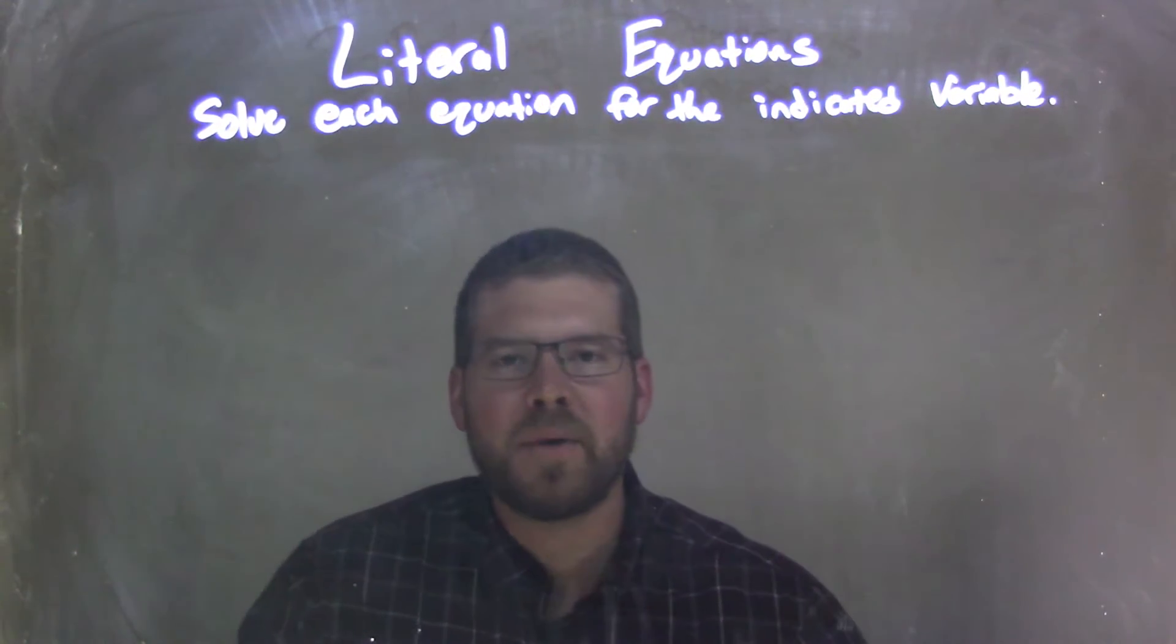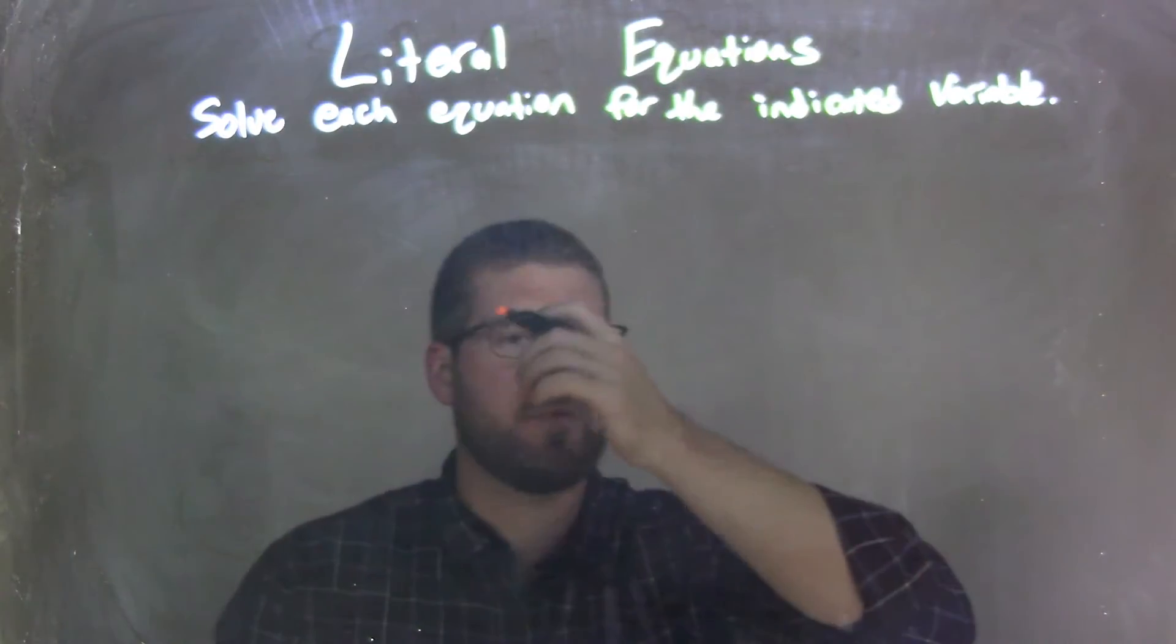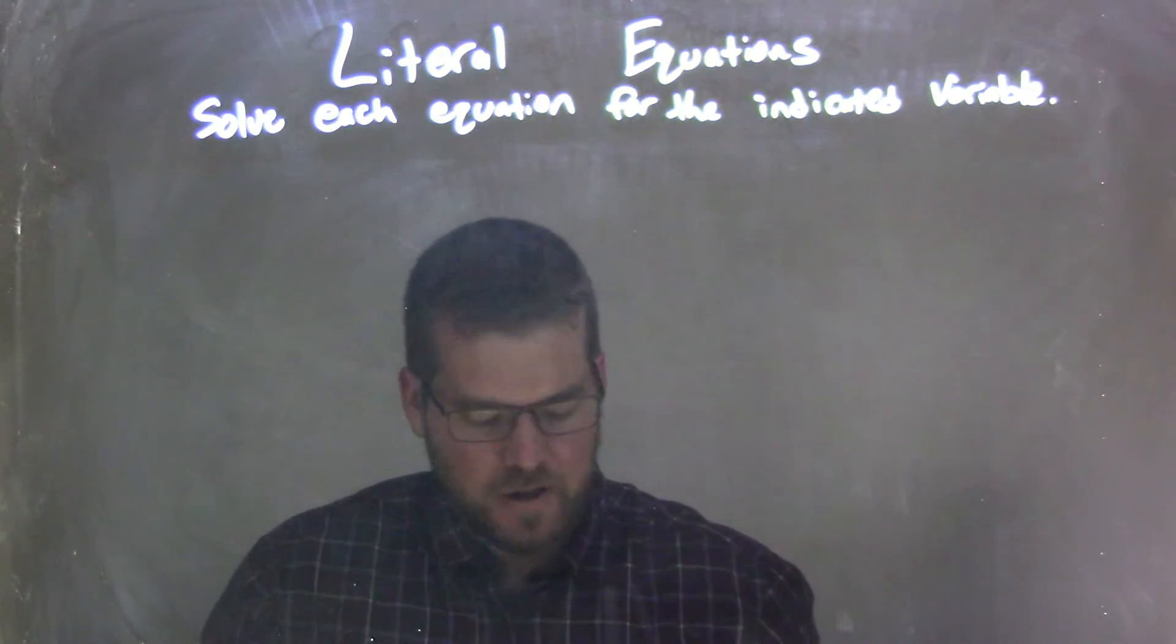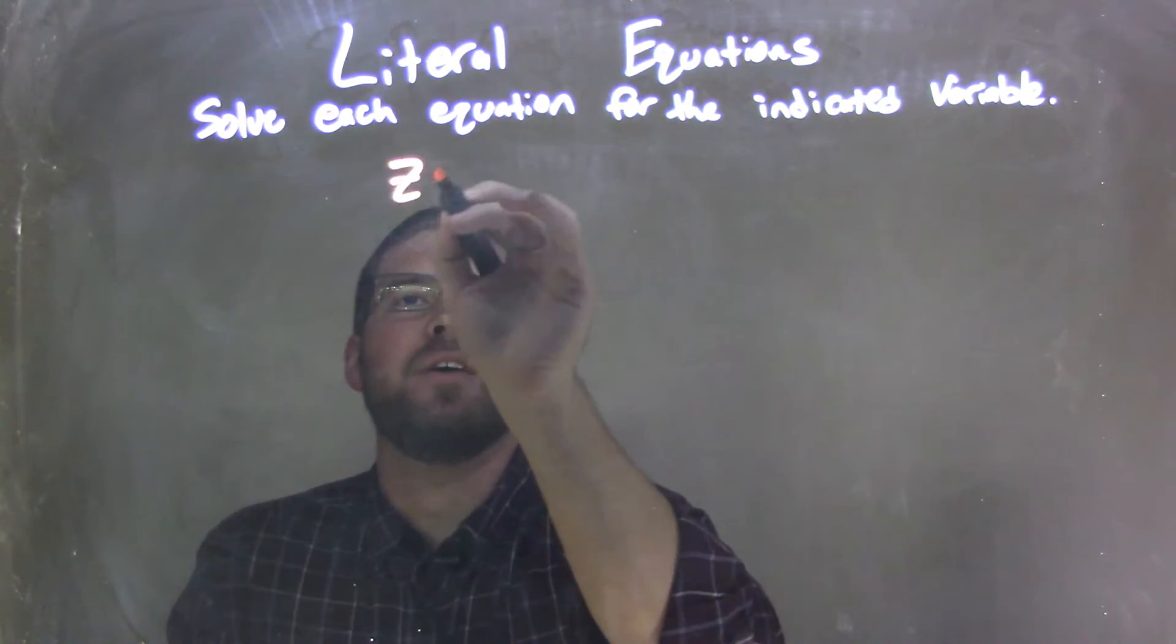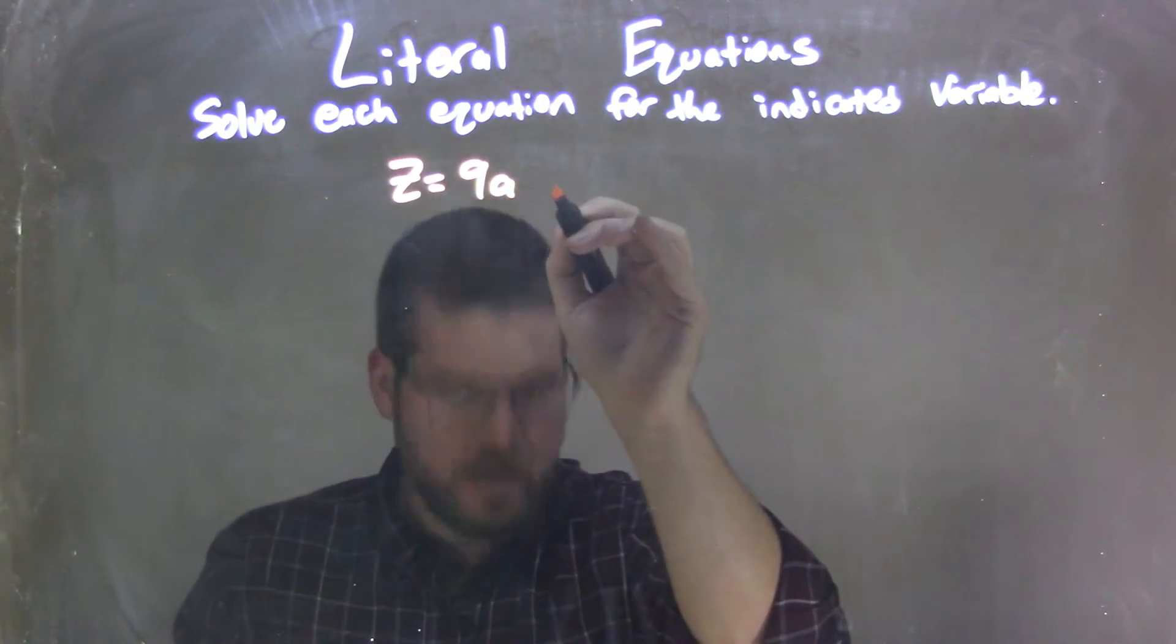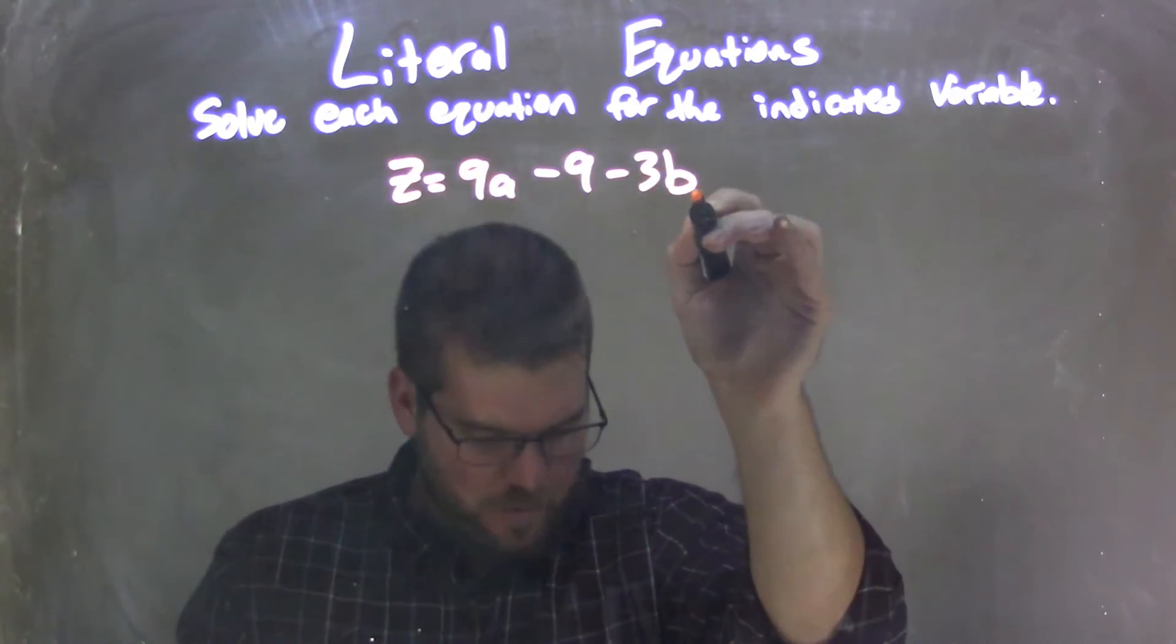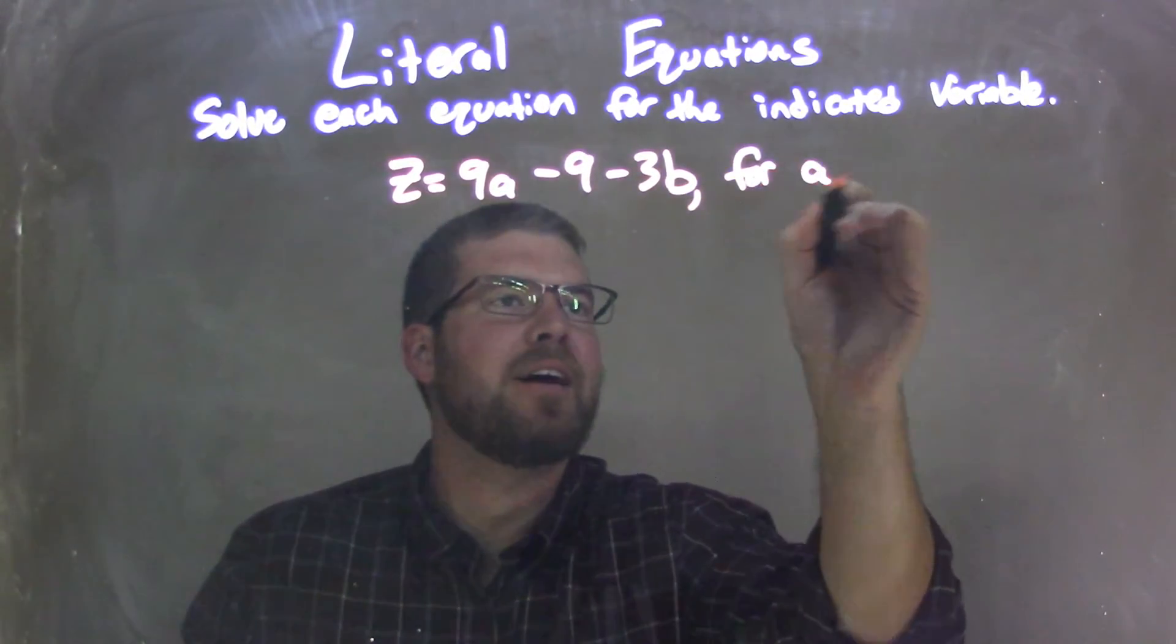Hi, I'm Sean Gannon, and this is MinuteMath. Today we're going to learn about literal equations and solve each equation for the indicated variable. If I was given this equation z equals 9a minus 9 minus 3b, we're going to solve that for a.